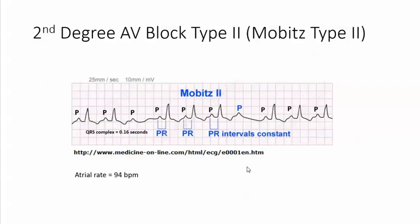So then look at the PRI. The PRI is 0.2 seconds, which is normal, and they are constant.